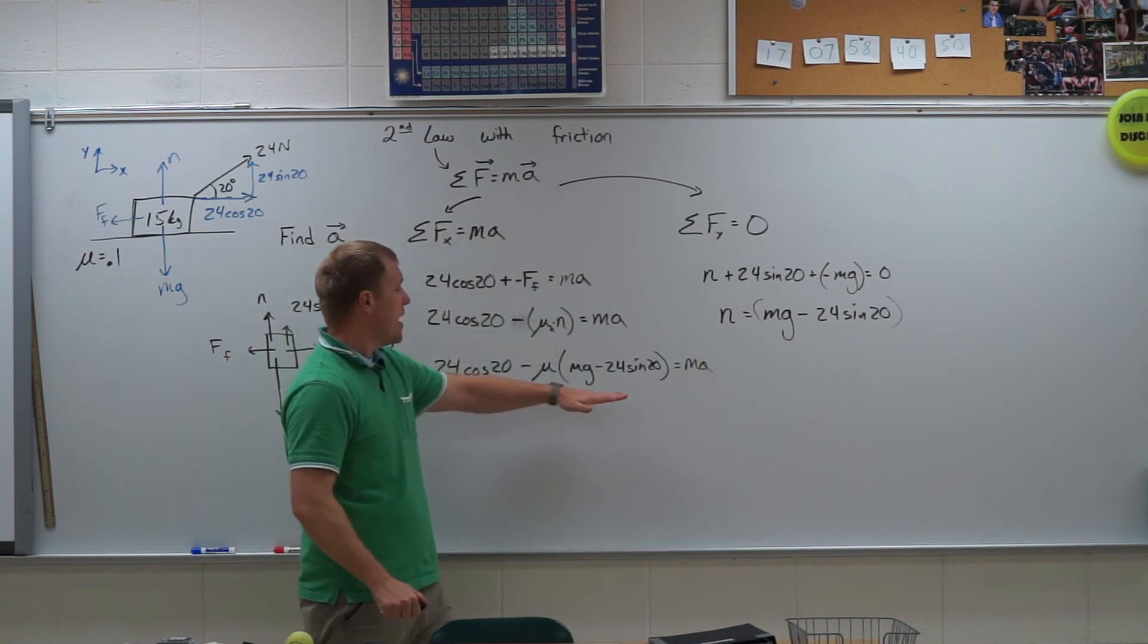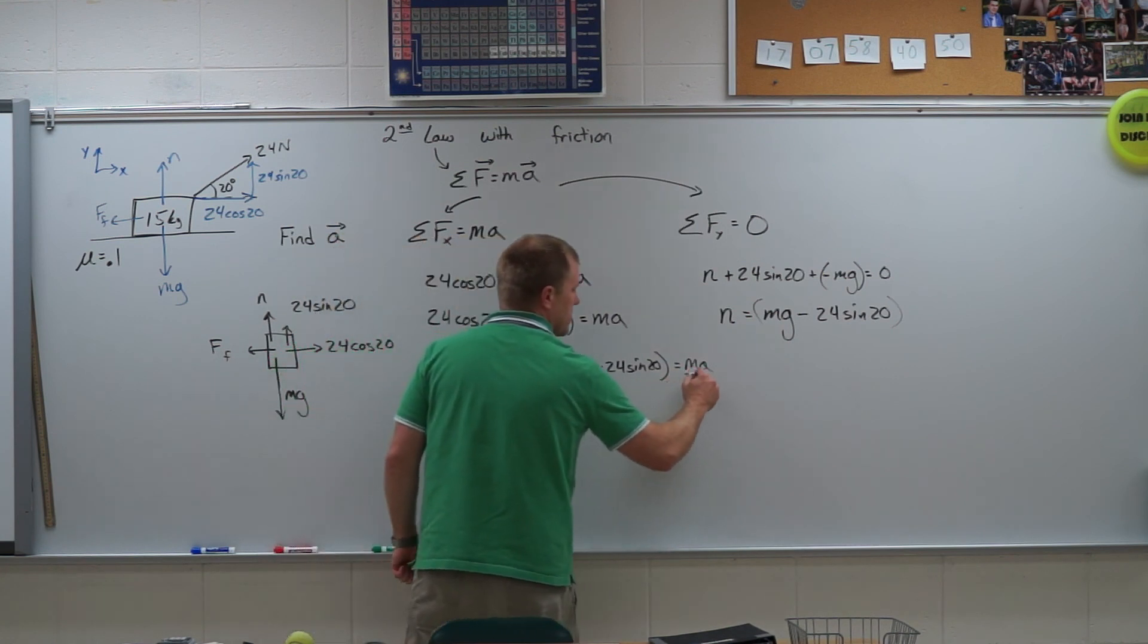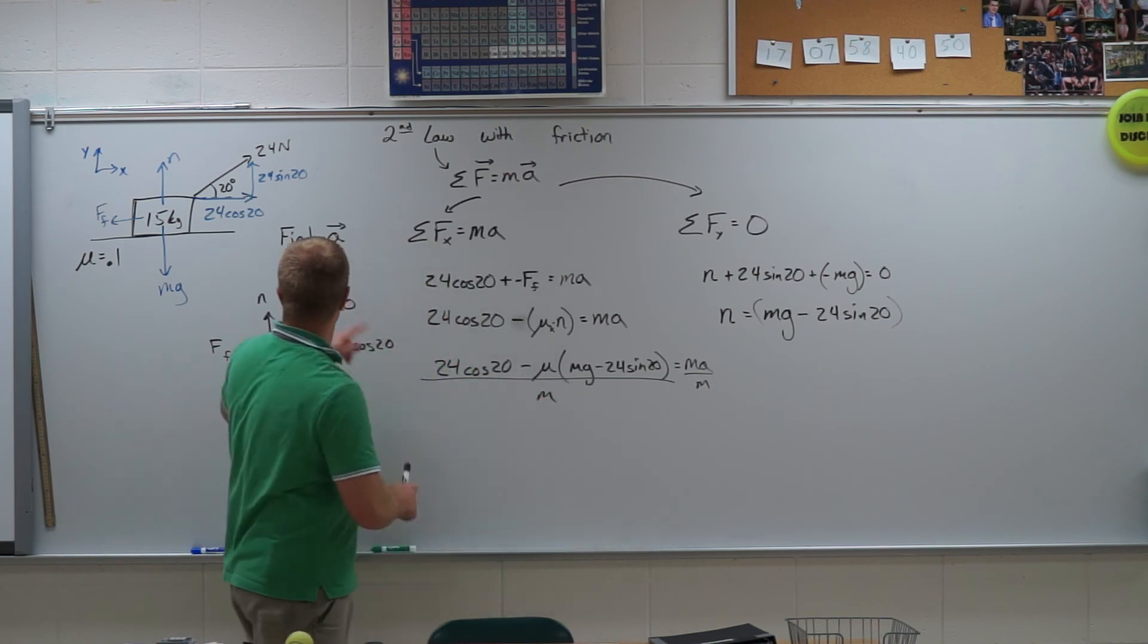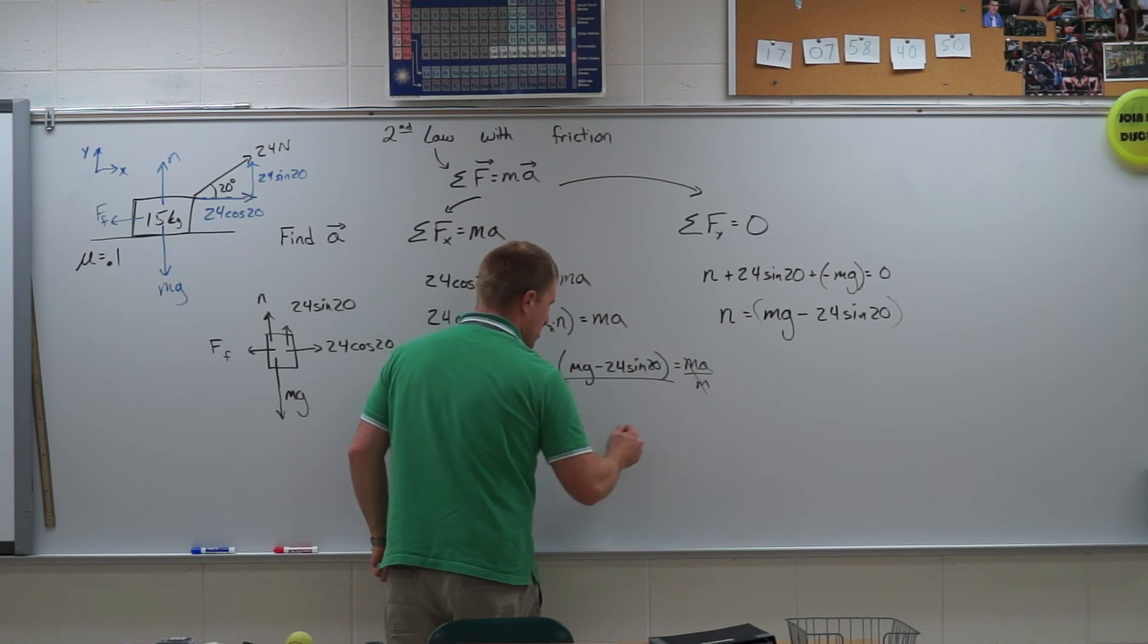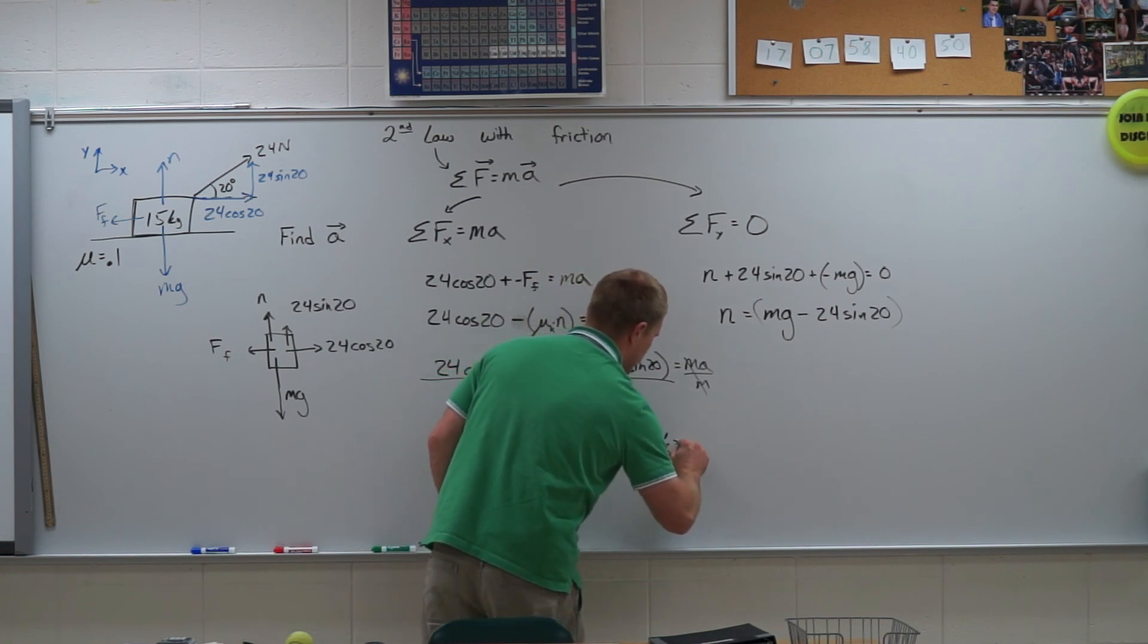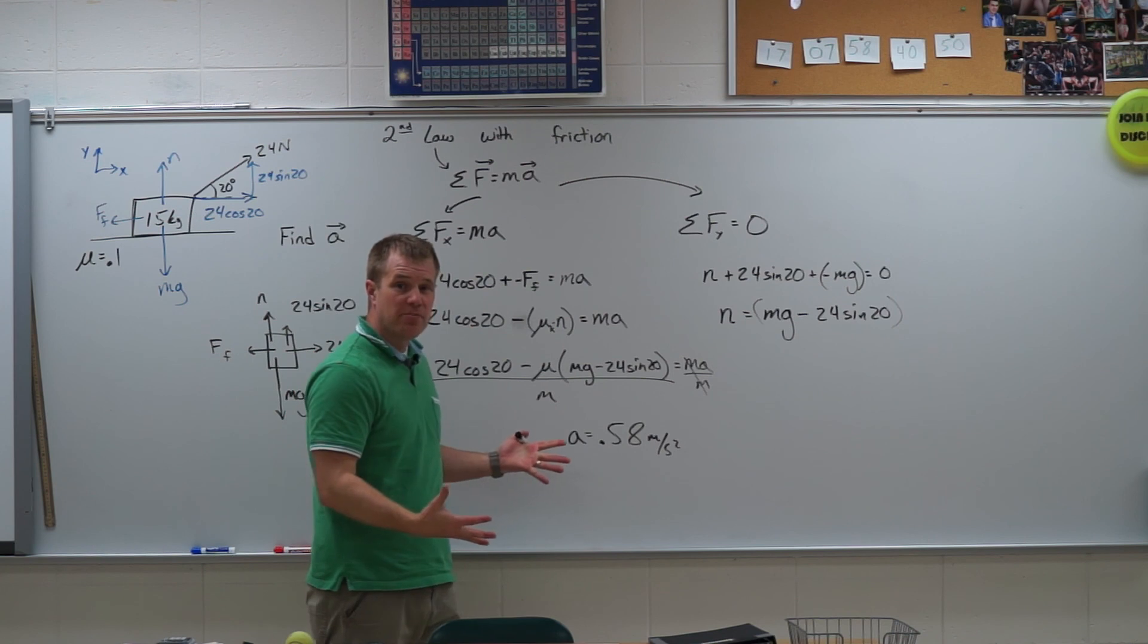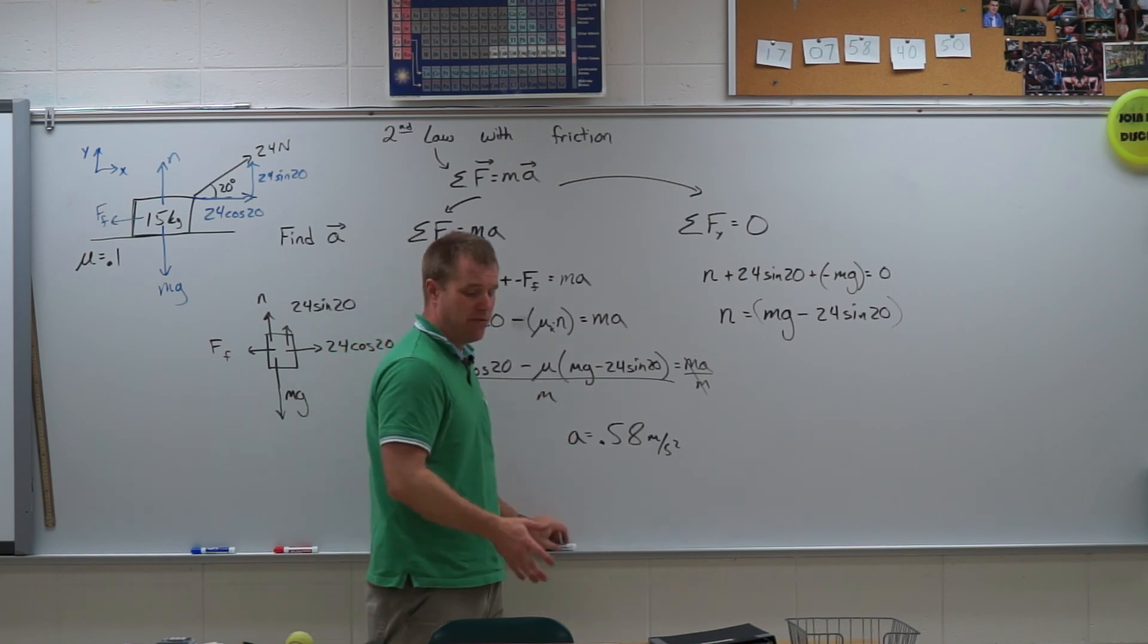Alright. The last step is I'm going to divide by m and solve for a. So I'm going to divide both sides by m. m is going to be 15, mu is 0.1. So if you plug in your numbers, you should get an acceleration of 0.58 meters per second squared. And if you're watching these videos in order, it was 1.5 meters per second squared without friction. So now it is less when I apply friction.